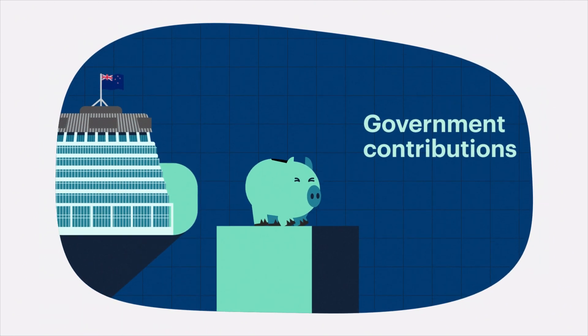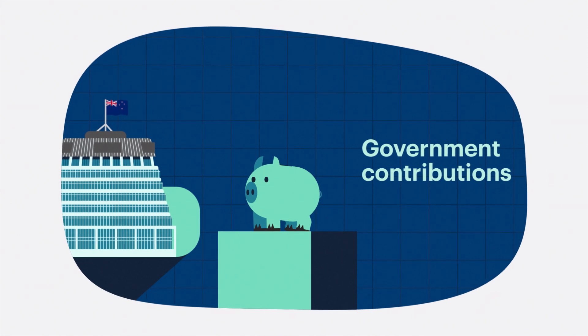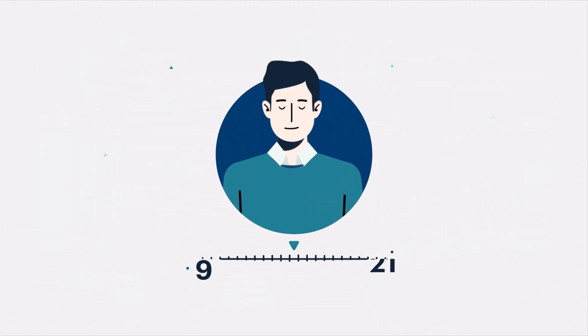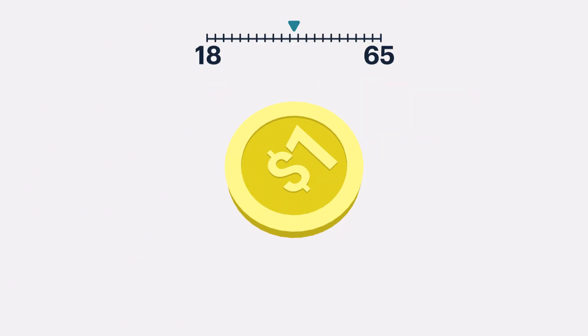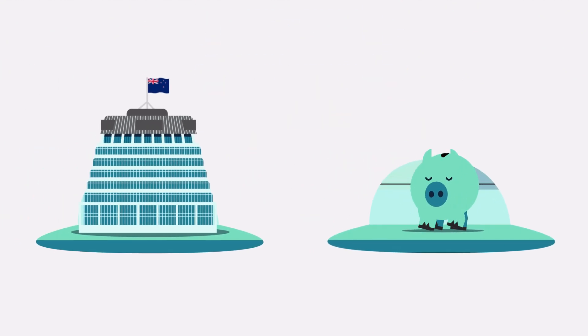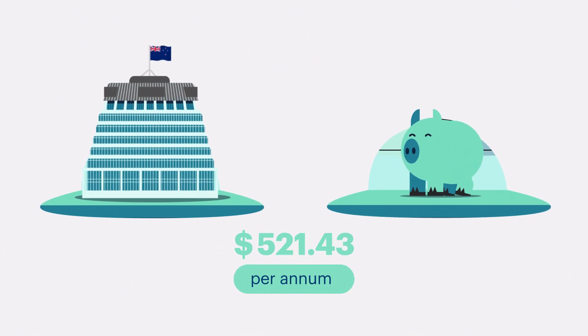The government also tops up your savings with what is known as the government contribution. If you're aged between 18 and 65 and meet the other eligibility criteria, for every dollar you save the government will add 50 cents up to the value of $521.43 each year.